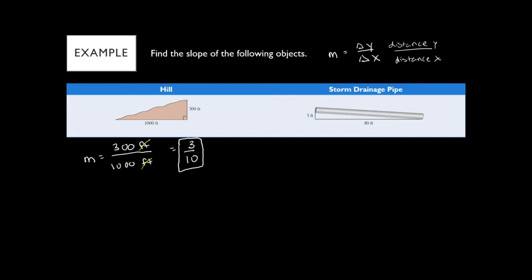For a hill or road, we usually give the slope as a grade, which is a percentage. So 3/10 equals 0.3, which equals 30%. The grade of this hill is 30%. We're looking more at a percentage just to determine how steep something is.